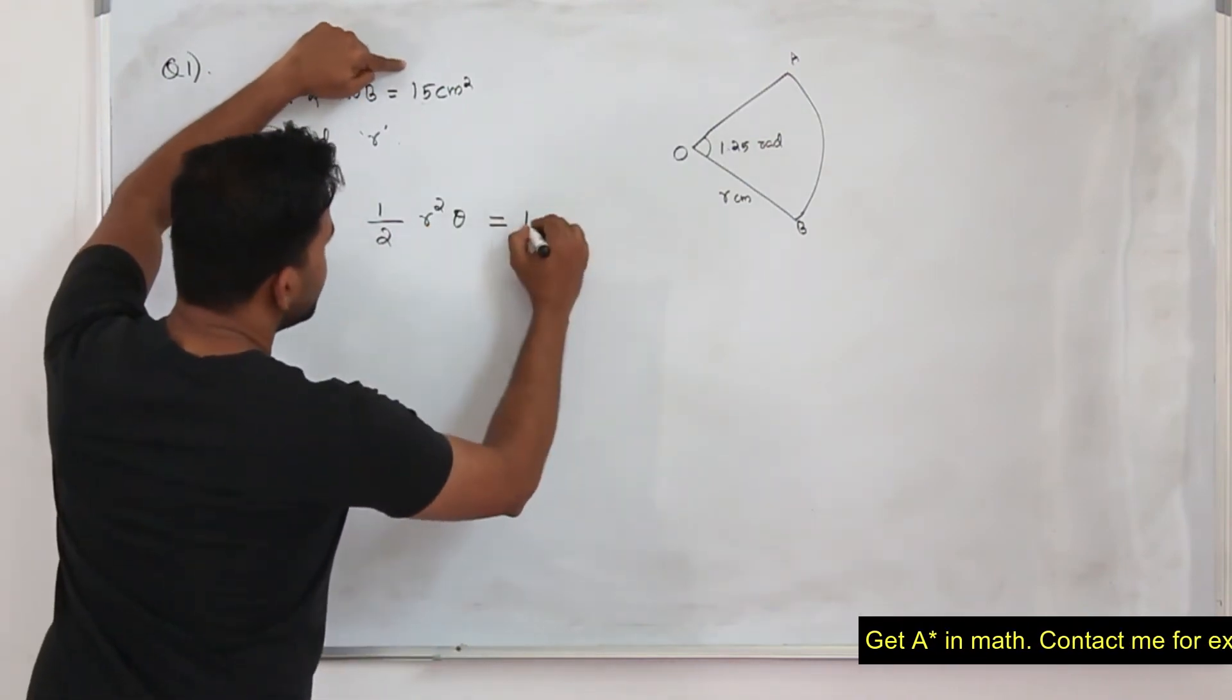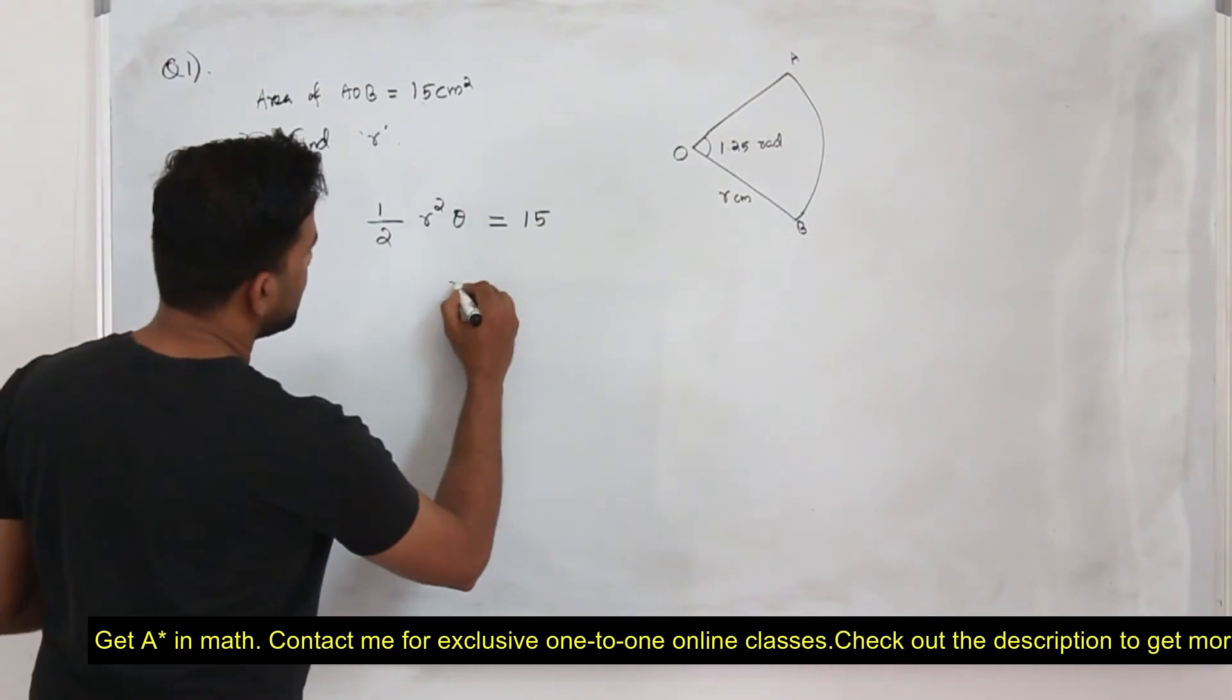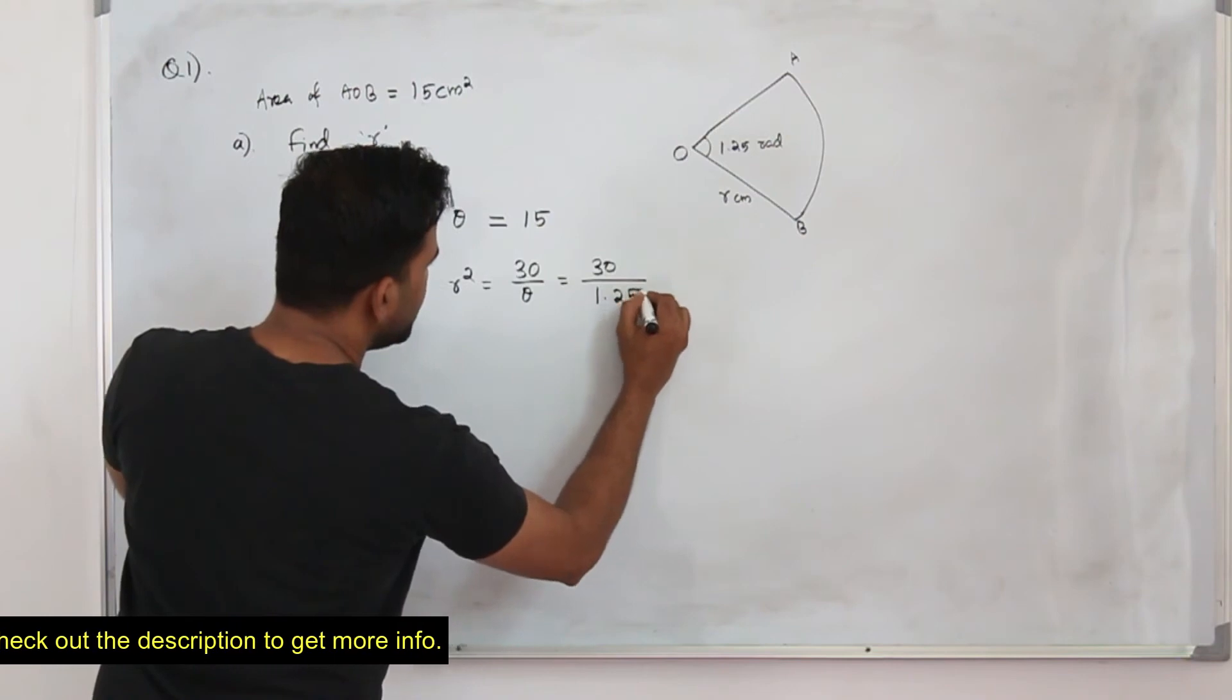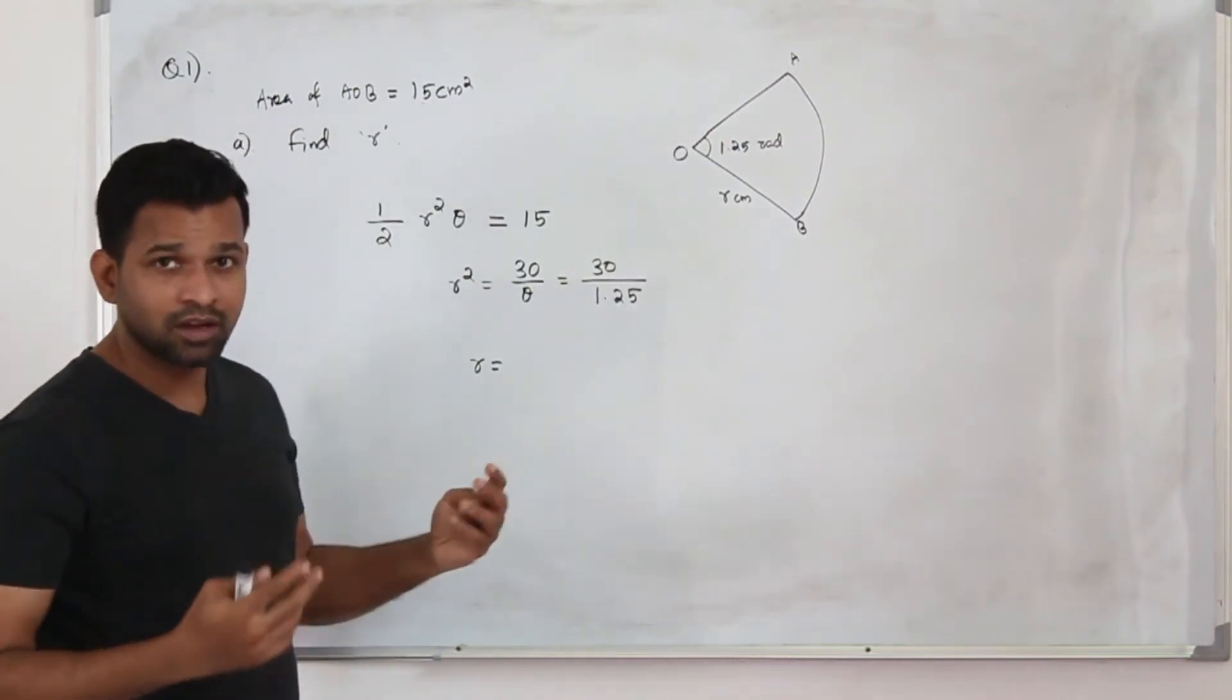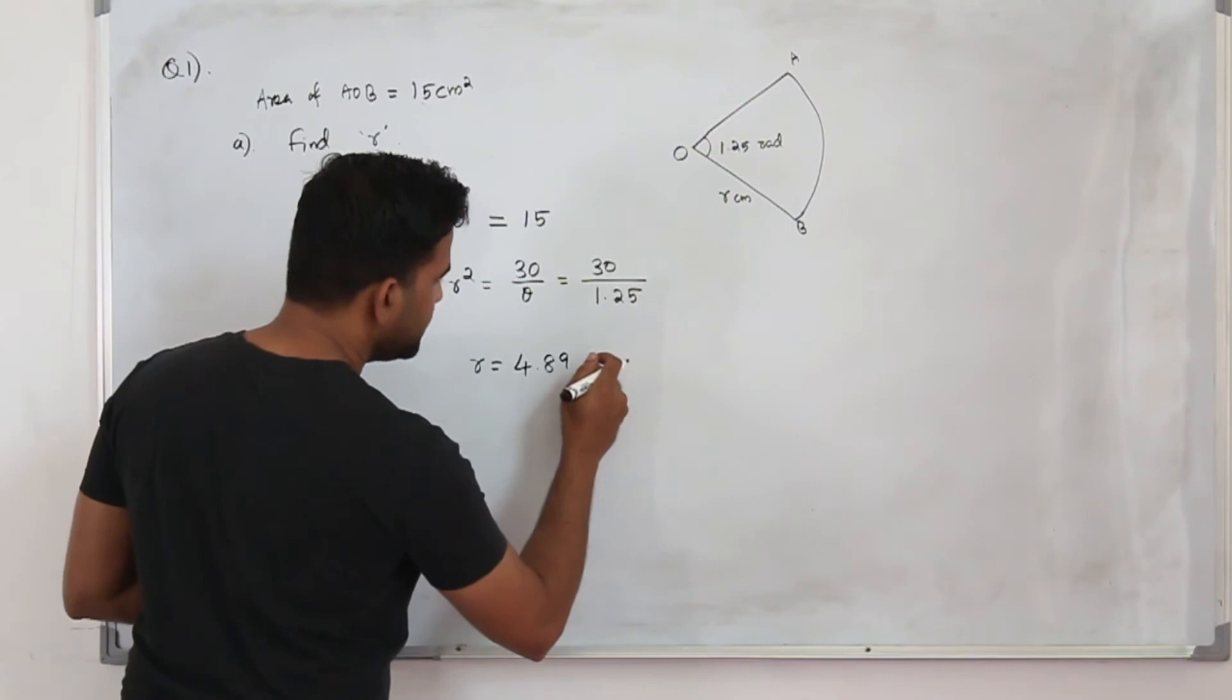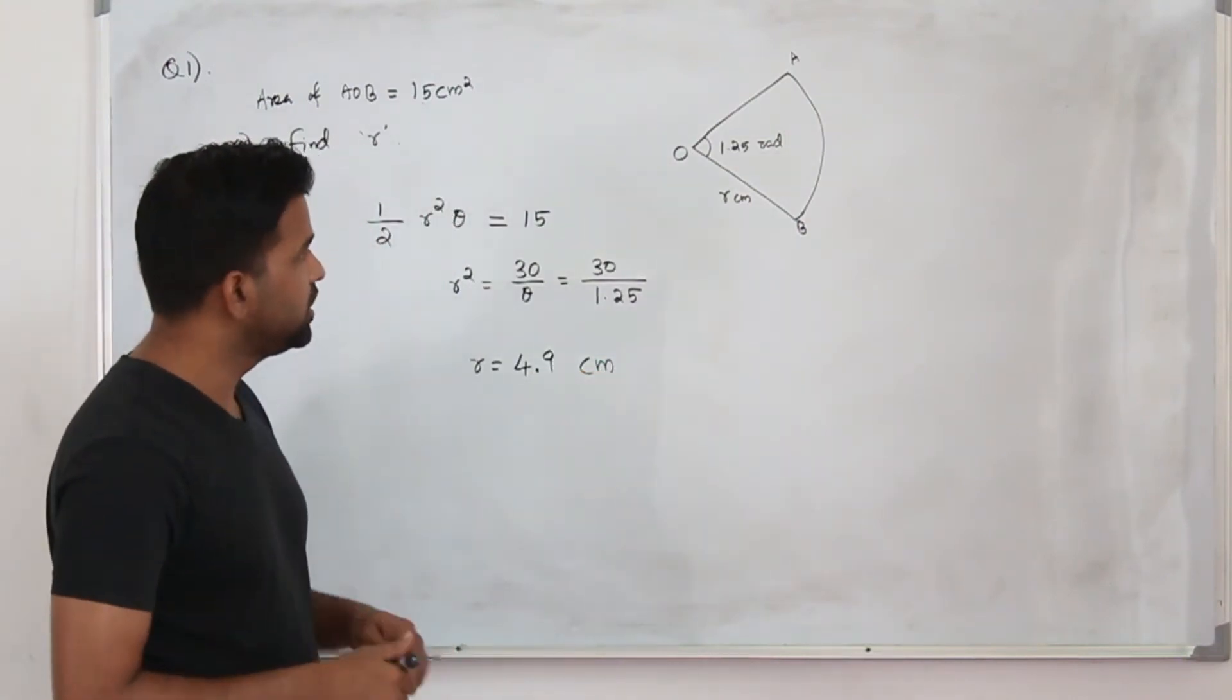So the area of the sector is 15. Replace theta by this value and make R as the subject. So we can find R. R square is—bring the two here—30 divided by theta, which is 30 divided by 1.25. So R will be square root of this value. It will be plus or minus, but since R is the radius, take only the positive value. So the answer is 4.898. When you round it to two decimal places, it will be 4.90 or 4.9 centimeters. That's the radius.